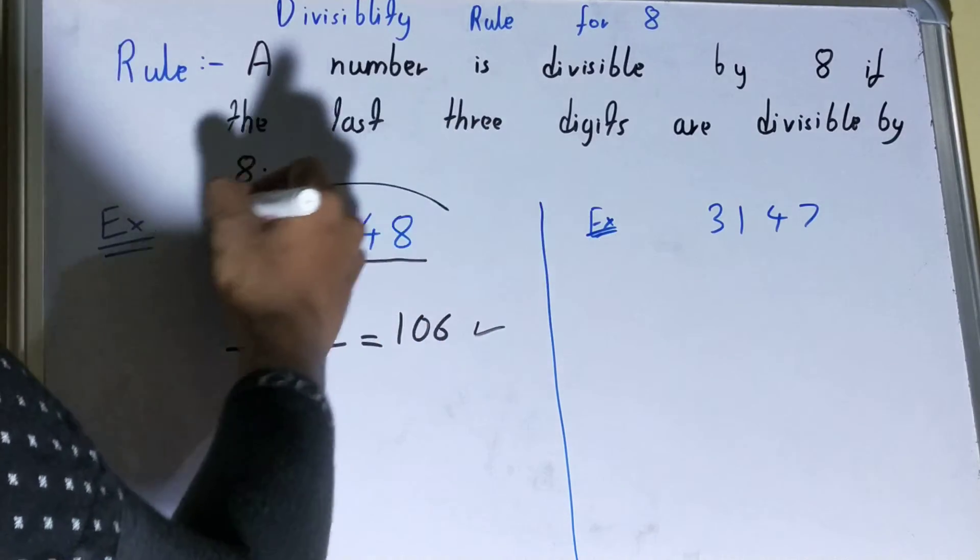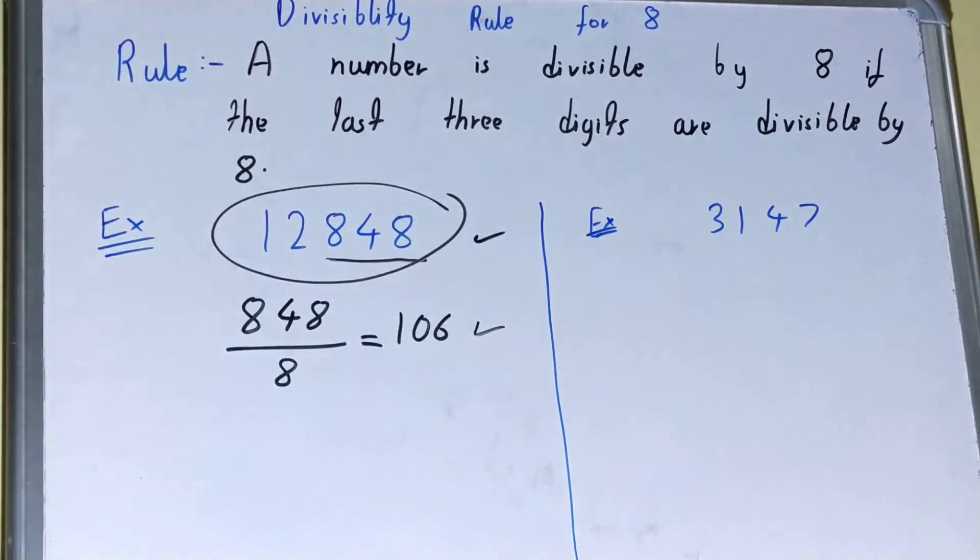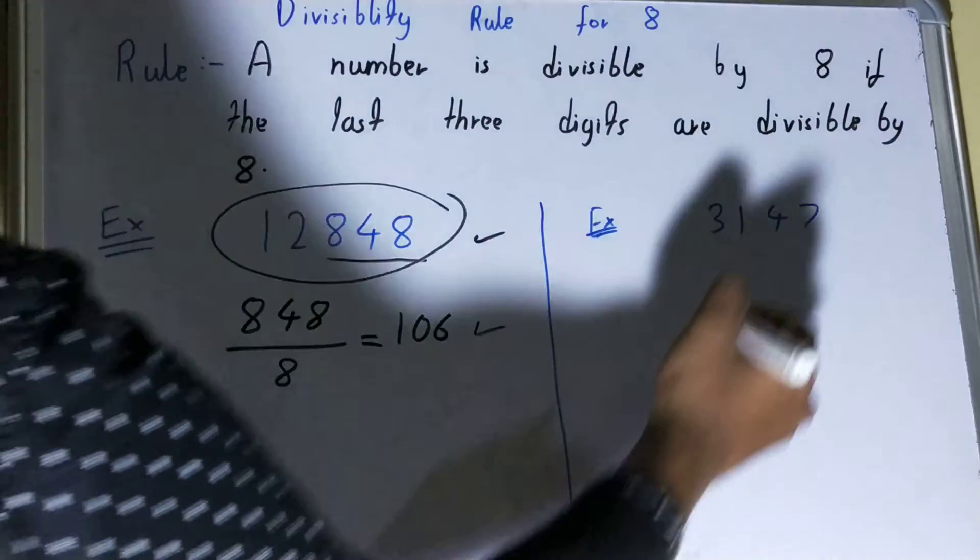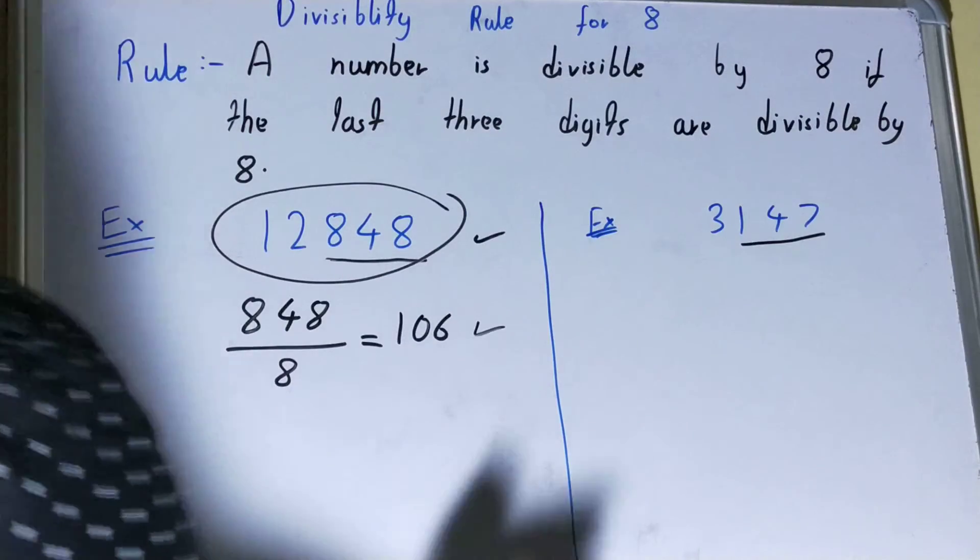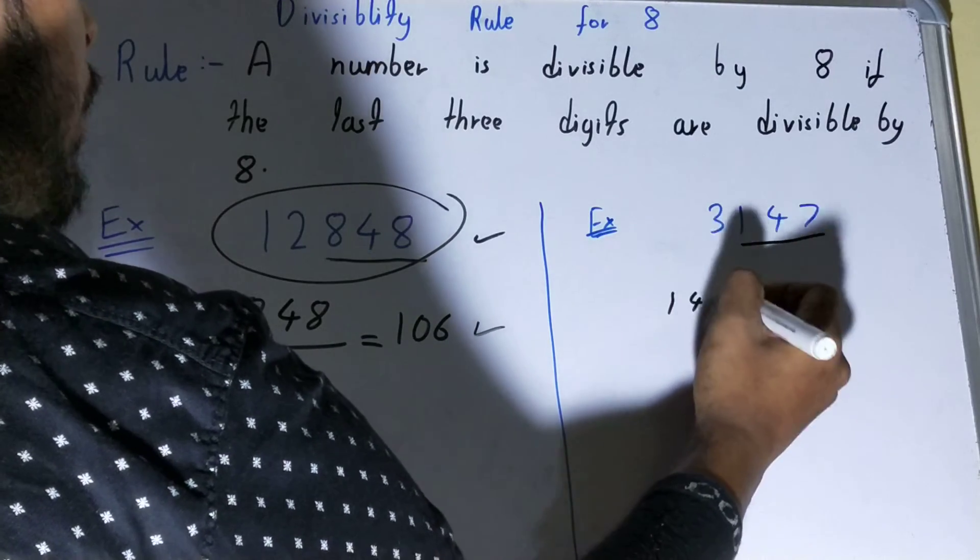We can say this whole number is also divisible by 8. Now let's check for another one: 3147. Again, we'll pick the last three digits and try to see whether it is divisible by 8 or not.